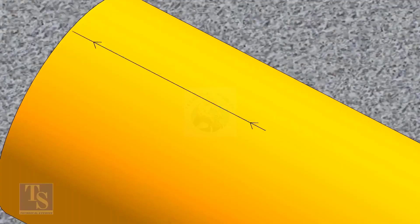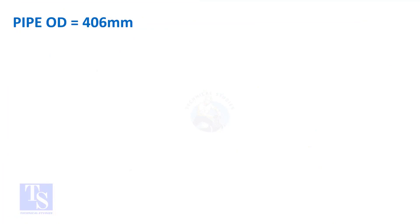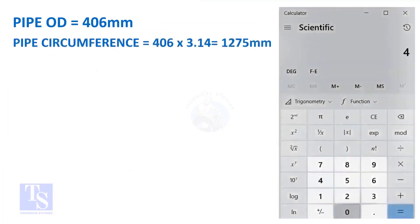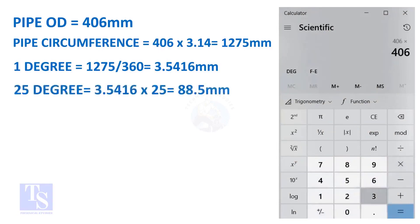Let us calculate the circumferential distance or arc length for 25 degrees. Multiply the OD by 3.14 to get the circumference of the pipe. Divide the circumference by 360 to get the arc length of 1 degree. Finally, multiply the 1 degree arc length by 25. Now you have the arc length of 25 degrees. You can apply this formula to get the arc length of any degree.